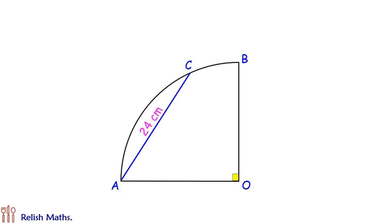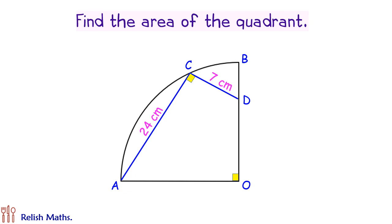Let's see today's question. Given is a quadrant AOB with line segment AC which is 24 centimeters. From point C, we draw another line segment CD perpendicular to AC. The length of CD is 7 centimeters. From this given data, we have to find the radius and area of quadrant AOB.